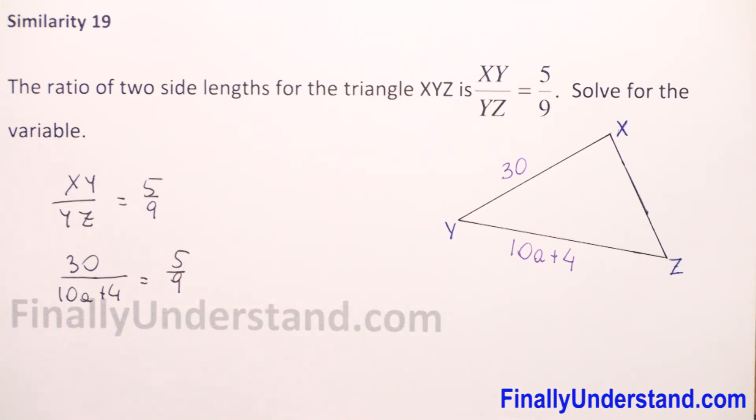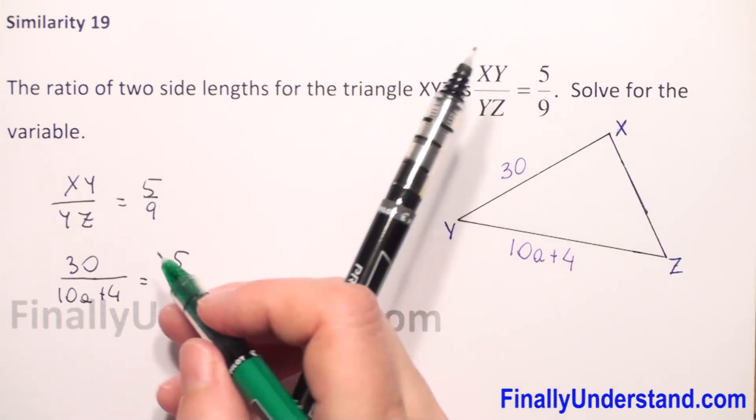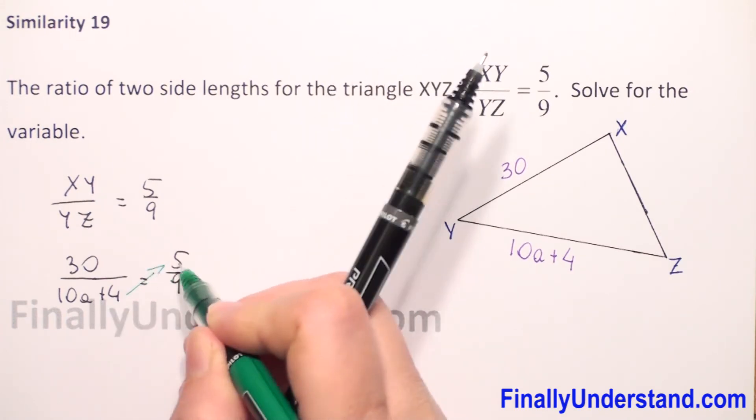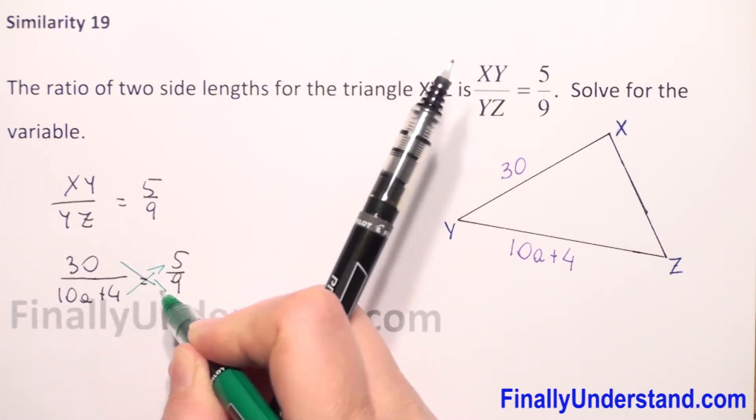So first we need to get rid of this proportion. So we will cross multiply, denominator times numerator, numerator times denominator.